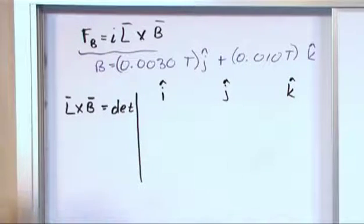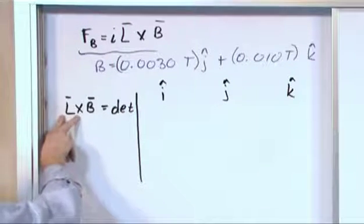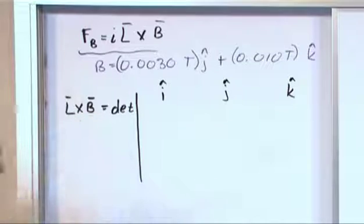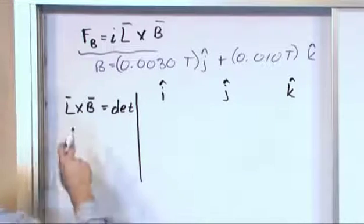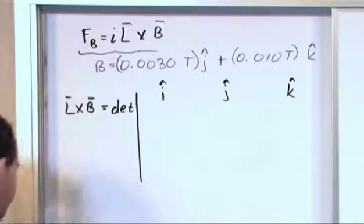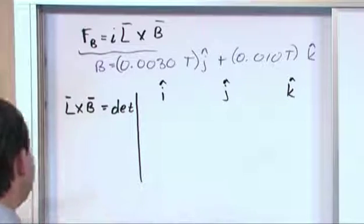So these are the directions that we have and we're crossing the wire vector L into the B vector, the magnetic field vector. So the wire vector, it says right here that the wire is 50 centimeters long and it's in the x direction.